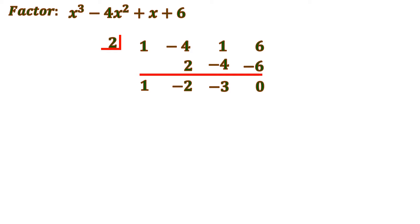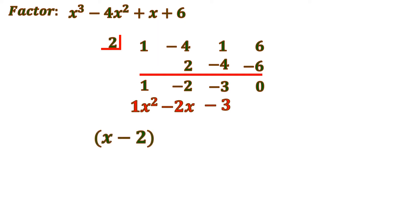One of the factors comes from reading the results from right to left, not including the remainder. We have negative 3 as the constant, negative 2x, and x squared. The factored expression is x minus 2 — since we chose positive 2 by trial and error — times the quotient x squared minus 2x minus 3.